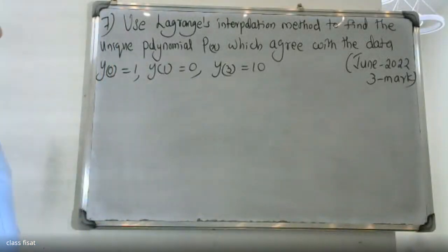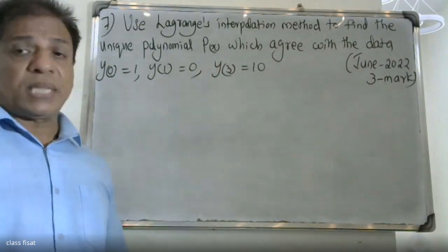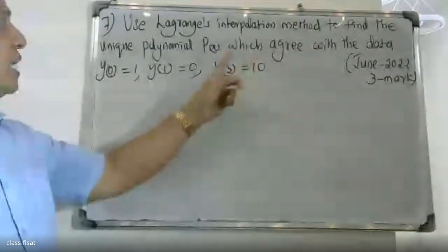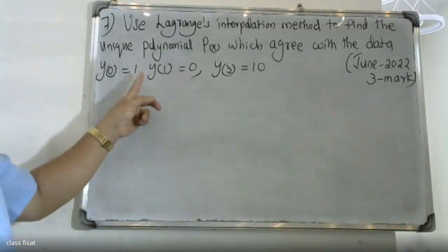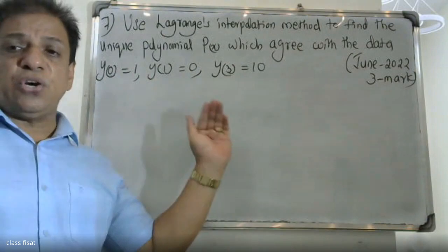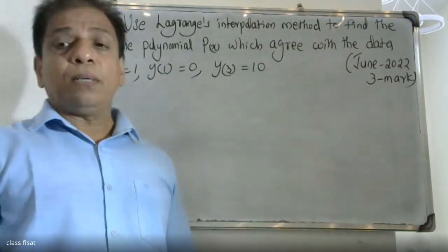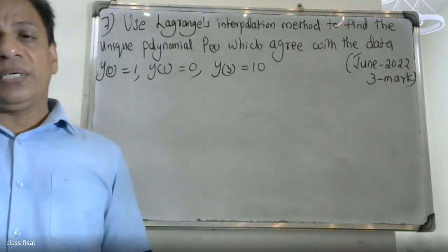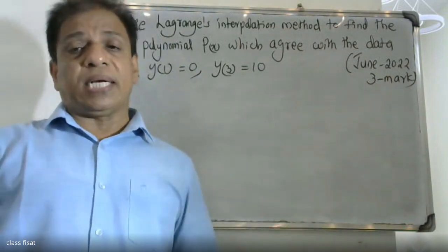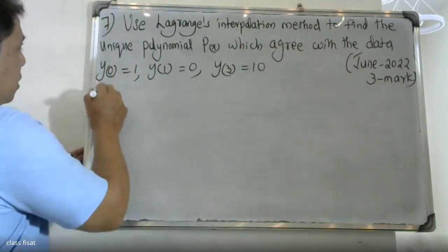Good morning students. At the university question, use the Lagrangian interpolation method to find the unique polynomial P(x) which agrees with the data: y(0) = 1, y(1) = 0, y(3) = 10.